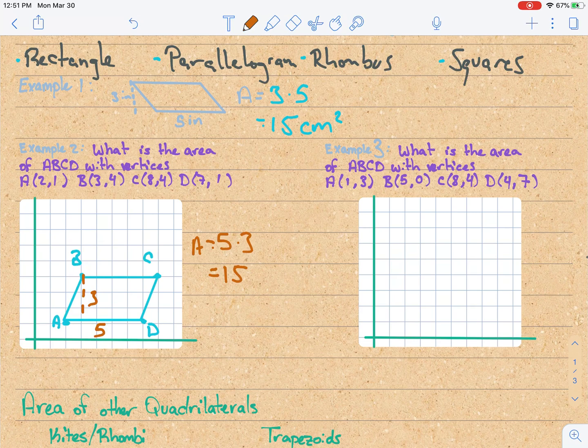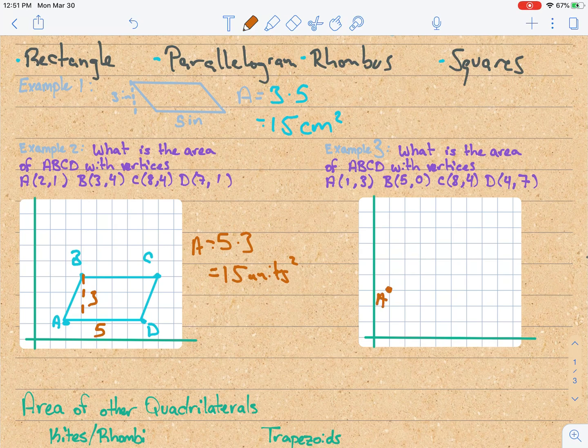So let's check the next example. We're going to start the same way. First is to plot our coordinates A, B, C, and D. A is at (1,3), B is at (5,0), C is at (8,4), and D is at (4,7).